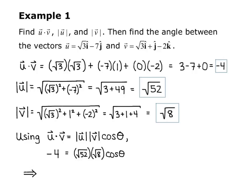So I have that cosine theta equals, I'm going to divide both sides by the number that was attached to cosine theta. So I get cosine of theta equals negative 4 divided by the quantity square root of 52 times square root of 8.